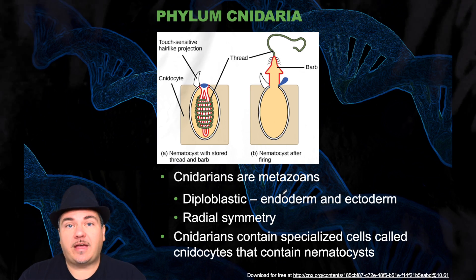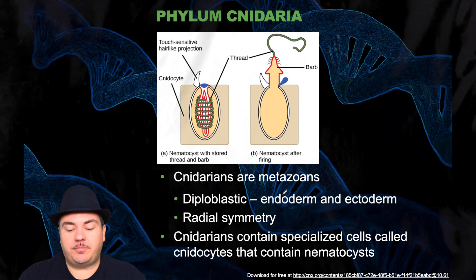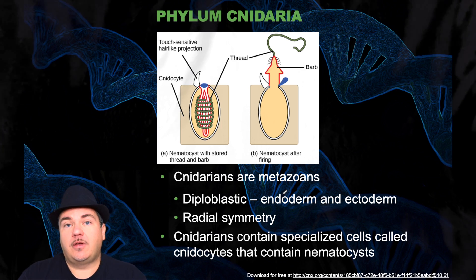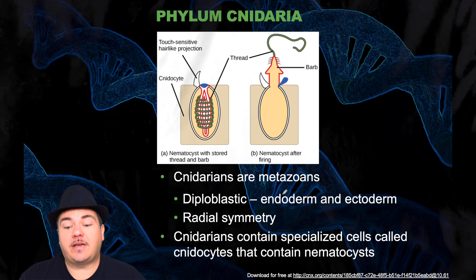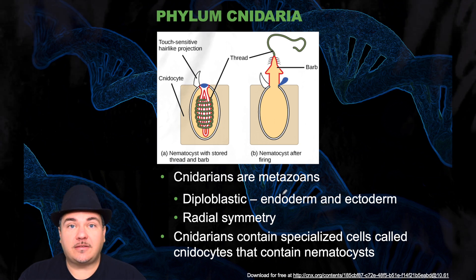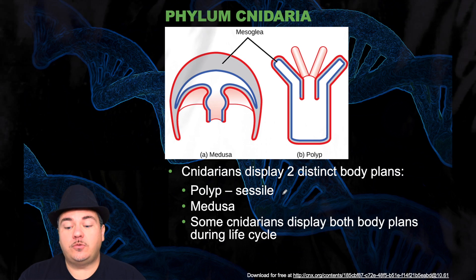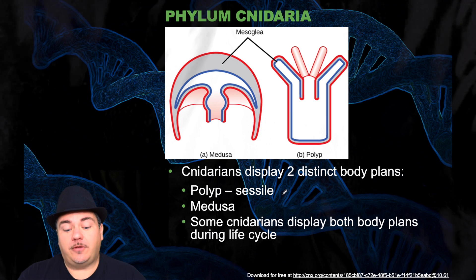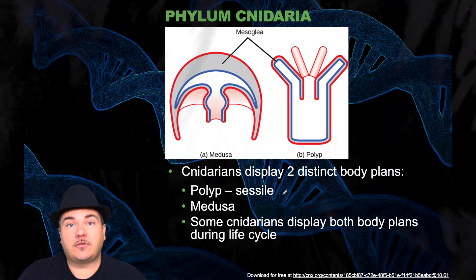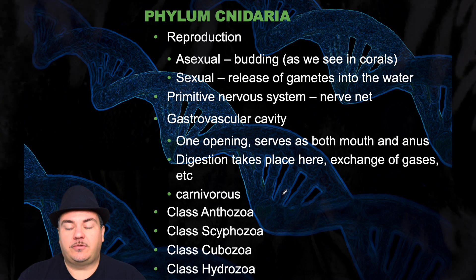Now we're going to talk about the Eumetazoa, which means they have true embryonic tissues. The first phylum is Cnidaria. Cnidarians are metazoans and diploblastic — they have endoderm and ectoderm but no mesoderm. They have radial symmetry, meaning they don't have a left, right, front, or back; their symmetry is more like a flower, symmetrical all around the center. Cnidarians contain specialized cells called cnidocytes that contain nematocysts — basically the stinging cells found in jellyfish. They display two distinct body plans: a polyp, which is sessile, and a medusa, which can be free-floating. Some cnidarians display both body plans during their life cycle. Reproduction can be asexual through budding, as seen in corals, or sexual through releasing gametes into the water.